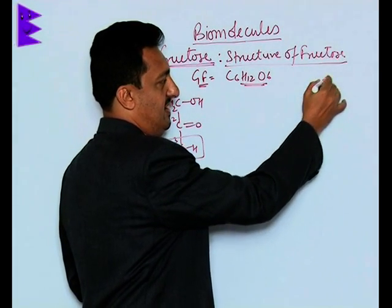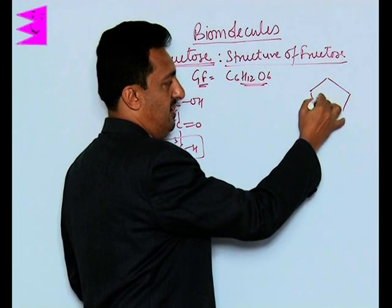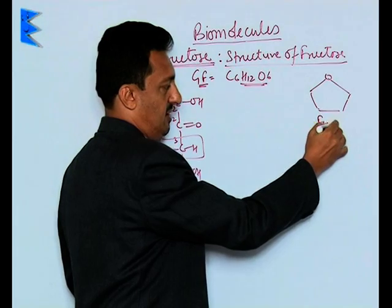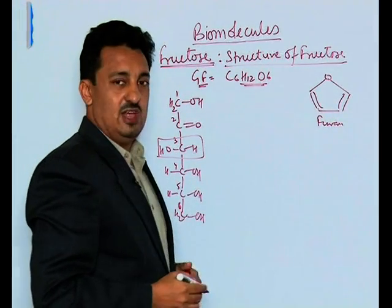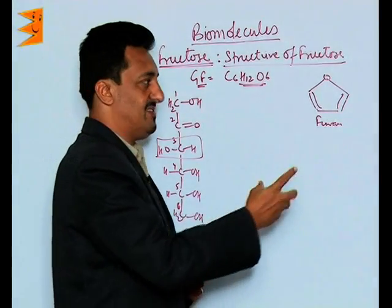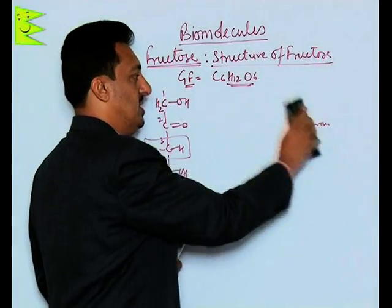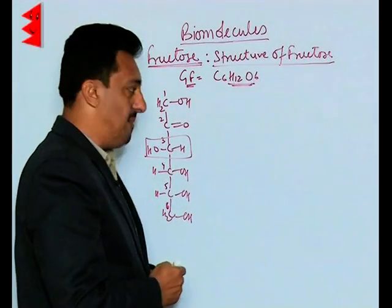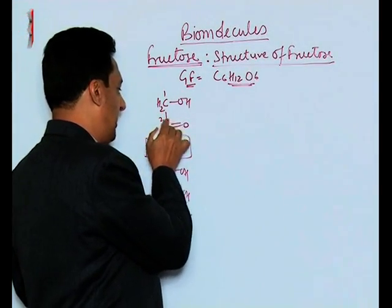This is the official projection structure of the fructose molecule. Fructose exists in a furanose structure — a 5-membered cyclic structure like furan, in which one of the atoms is oxygen. It is a heterocyclic 5-membered ring structure.